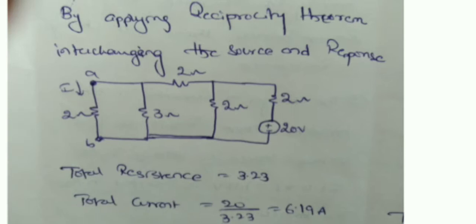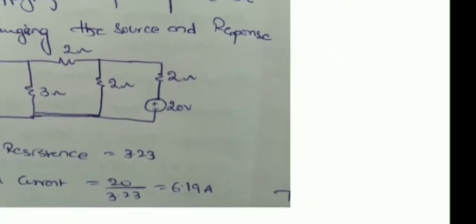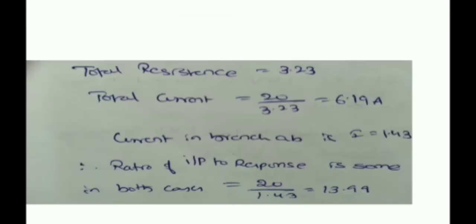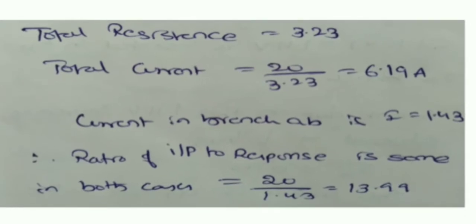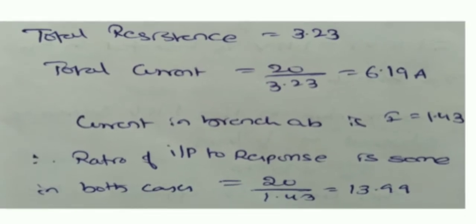You require the current through branch AB, not the total current. By applying the current division principle, the current in branch AB is 1.43 amperes. The ratio of response to excitation — input current to input voltage — is 20 divided by 1.43, which equals 13.99 in both cases. Since the ratios are the same, this network is following the Reciprocity Theorem. Hence, the Reciprocity Theorem has been verified.